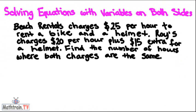Hi, this is Betty, and today I'm going to show you how to solve equations with variables on both sides. So the problem is, Beach Rentals charges $25 per hour to rent a bike and a helmet. Roy's charges $20 per hour plus $15 extra for a helmet. Find the number of hours where both charges are the same.